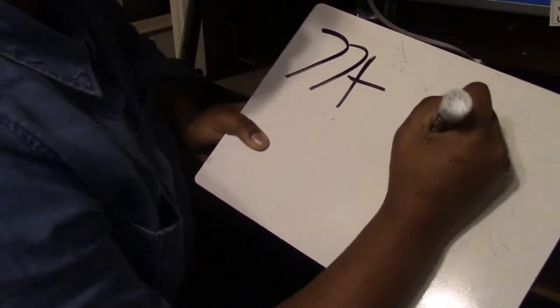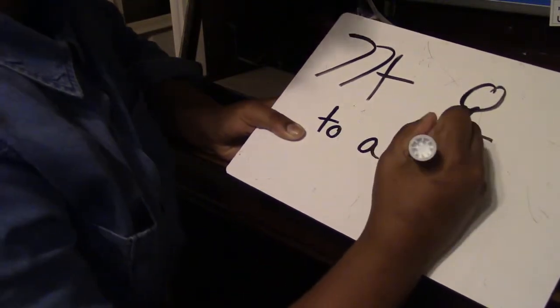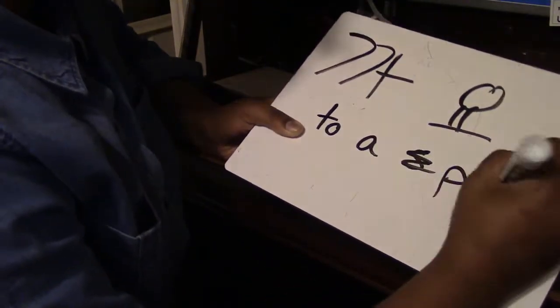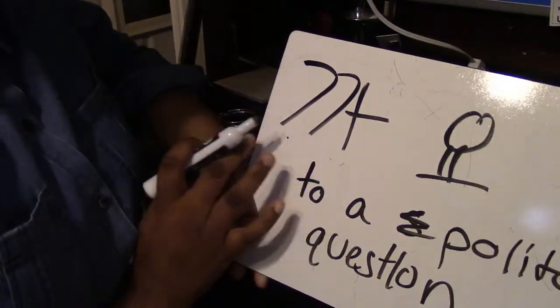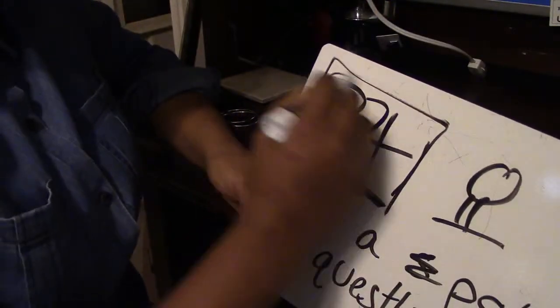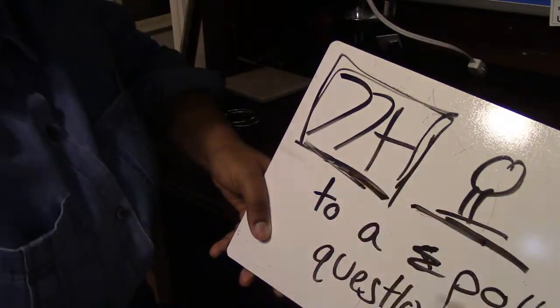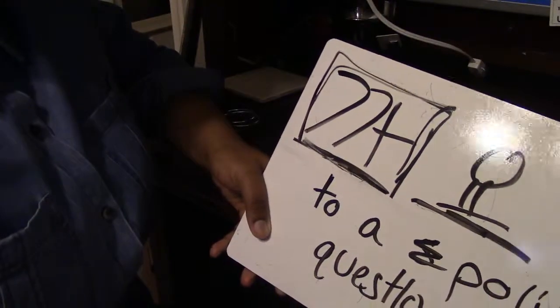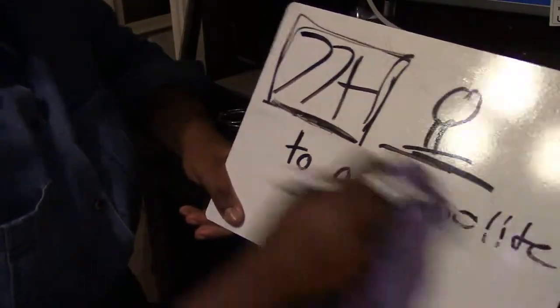Now with 까 and 요, it makes a polite question. 까 is a particle that changes the verb into a polite form, and then you add 요 to the end to make it a polite question. Both of these are needed when talking to someone you just met for the first time, someone older than you, or someone you respect.